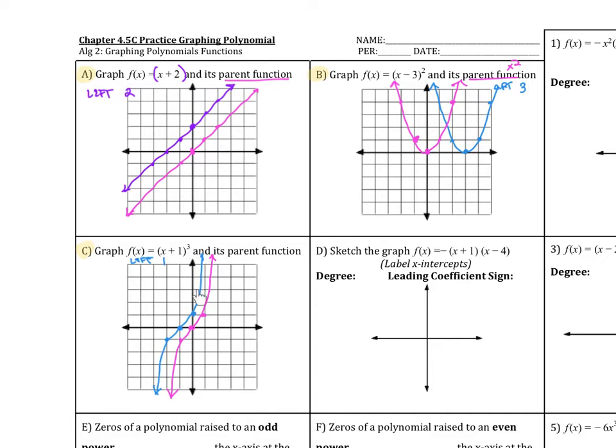So x plus 1 cubed moves left 1. The parent function is at 0,0. Right 1 is 1, and left negative 1 is negative 1 here. There is our parent in pink and here is the blue. Notice that it passes through that x-axis at negative 1.